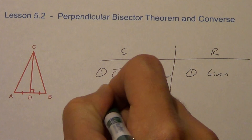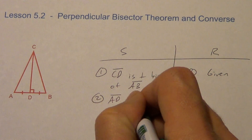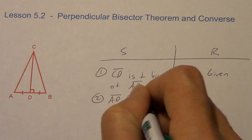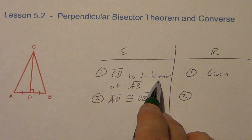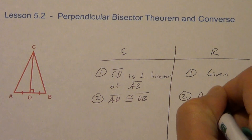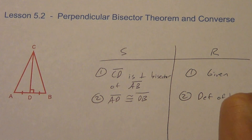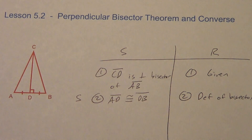Statement two: AD is congruent to DB — we already know that, it's marked. The reason comes from this word right here. Bisect means to cut in half, so the reason is the definition of a bisector. I'm going to put an S for side — I have one side of my triangle.